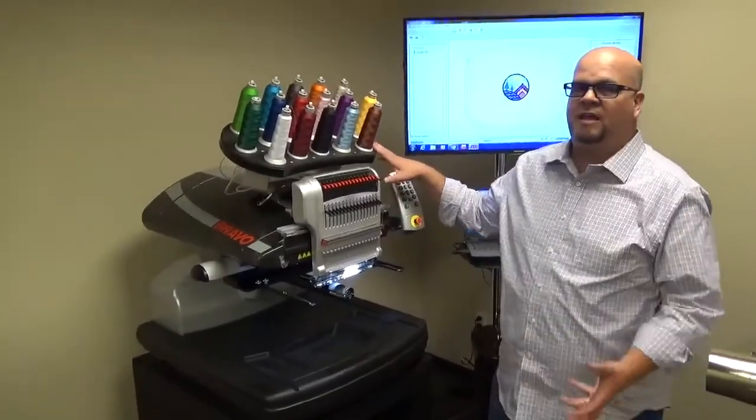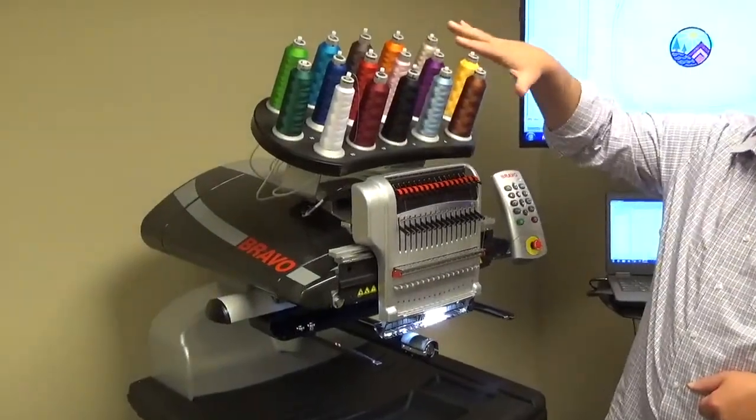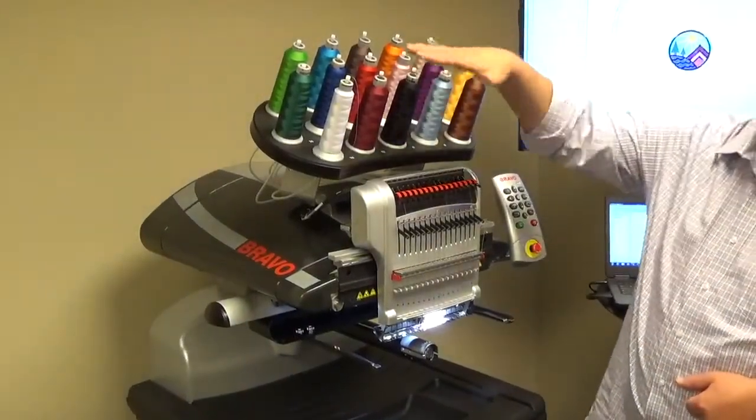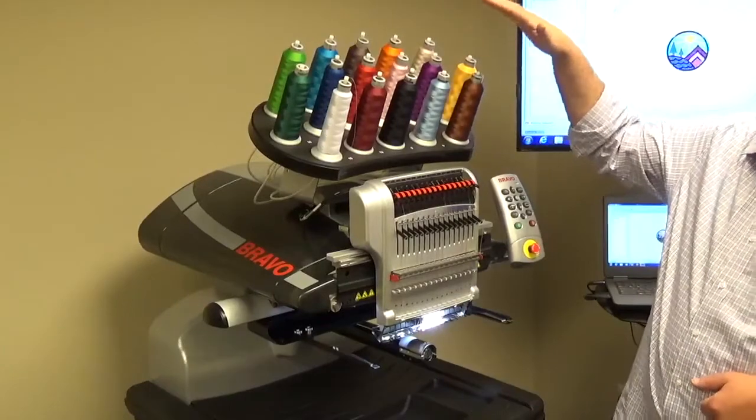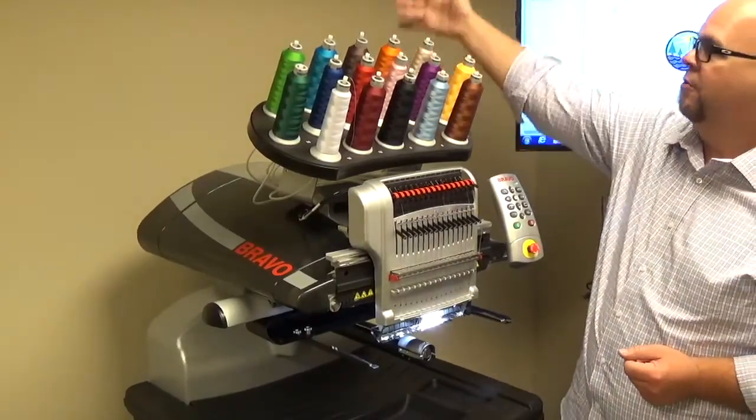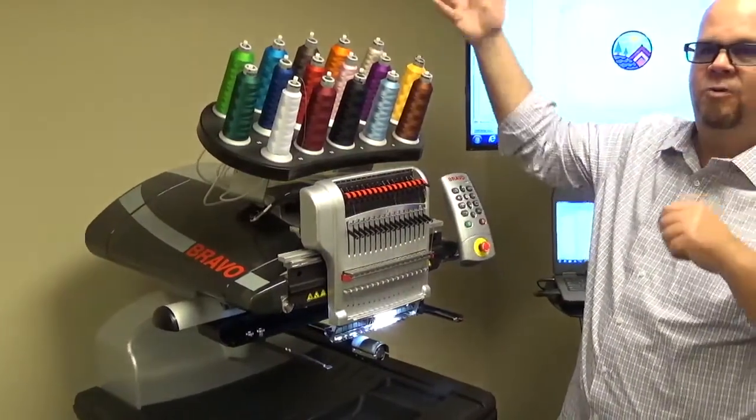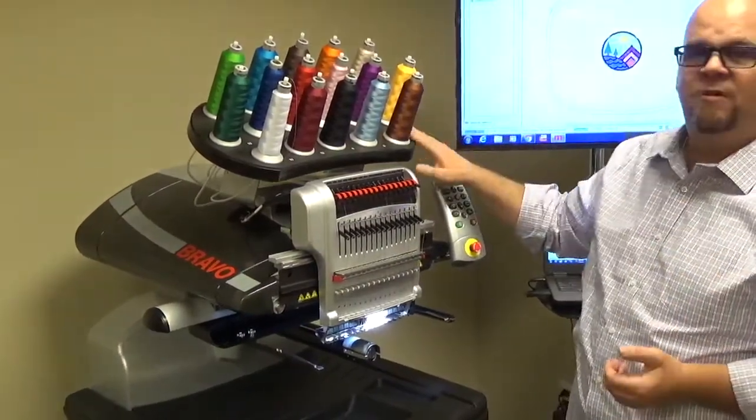Bravo machine is a prosumer level machine, has 16 cones of thread. You'll notice that the cones are right out front. That allows easy access, so instead of the cones being behind, or the thread running up and having a chance to tangle with itself, very hard to re-thread, this system is very easy.